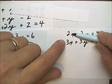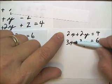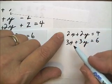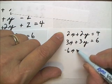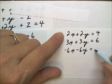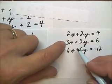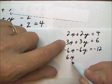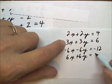And if I make one of them negative, then when I add it together, it adds to 0. So, let's do that. I'll multiply this top one times negative 3. So, I have negative 6x minus 6y equals negative 12. And now I'm multiplying the bottom one by 2. That's 6x plus 6y equals 12.